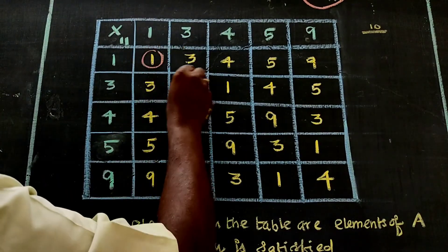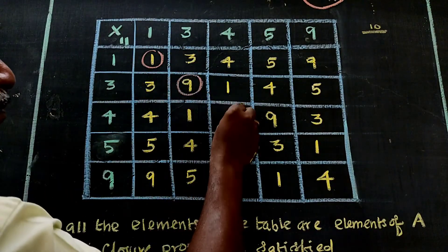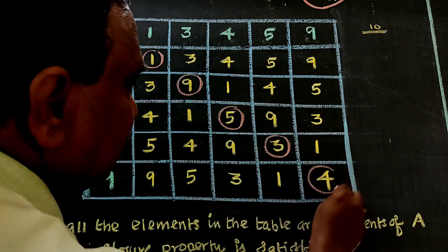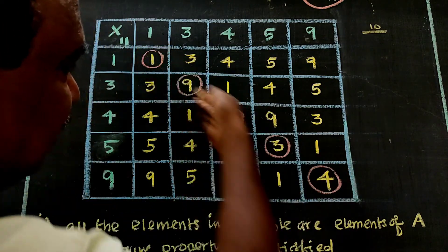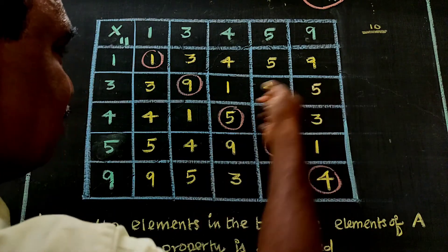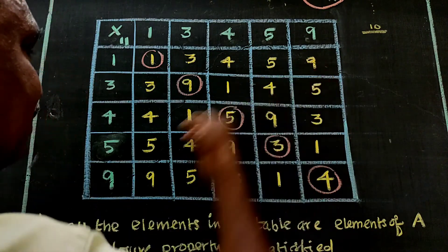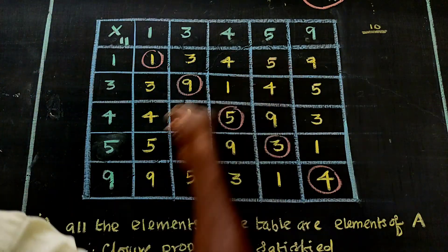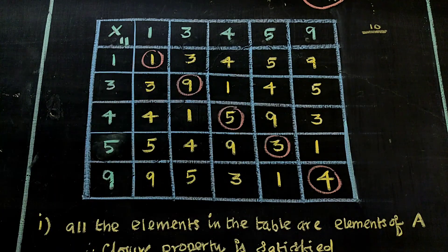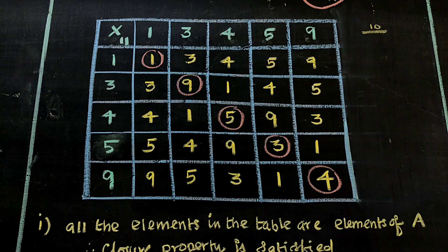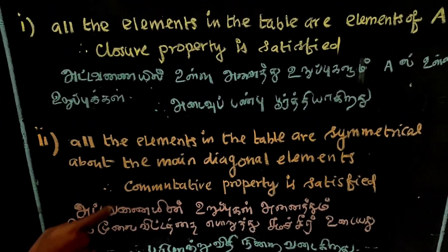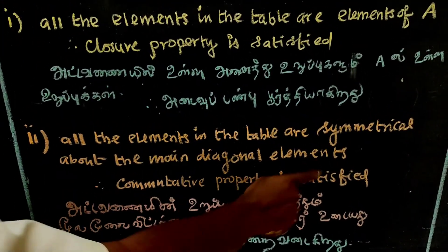This is the main diagonal of the table. If you look at the main diagonal elements, they form a line of symmetry — all the elements in the table are symmetrical about the main diagonal. That is the commutative property.